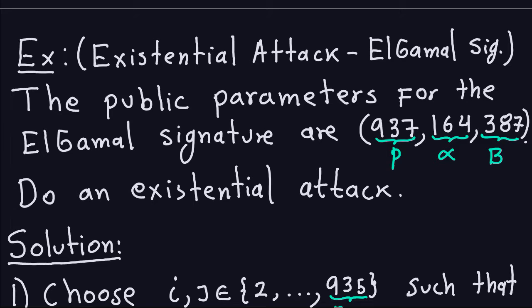For this particular example, suppose we have these public parameters: p = 937 (the prime), α = 164 (a generator of the group), and b = 387, which is α to the private exponent. Now we don't need to actually know the private exponent to fake a signature — that's the purpose of this existential attack. You don't need the private key to produce a valid signature. Because the numbers are small you could compute the discrete log of 387 in base α to get the private key, but let's not do that.